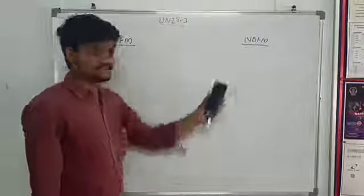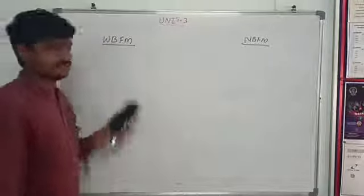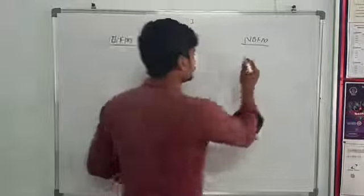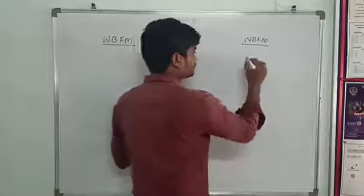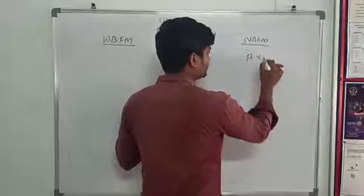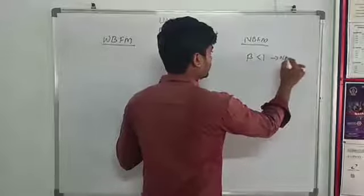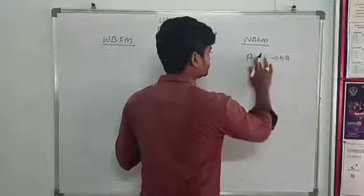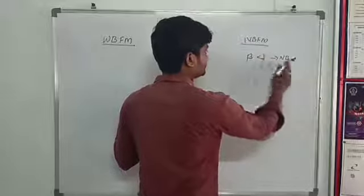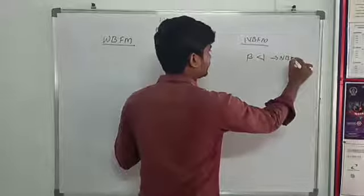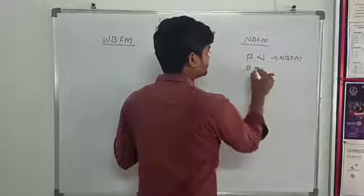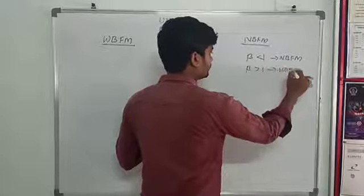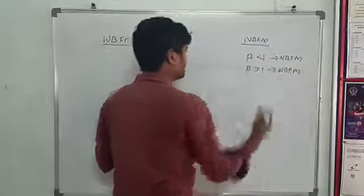For narrow band FM, the bandwidth is very narrow. The modulation index beta is less than 1 for narrow band FM. When the modulation index is greater than 1, it is wide band FM.